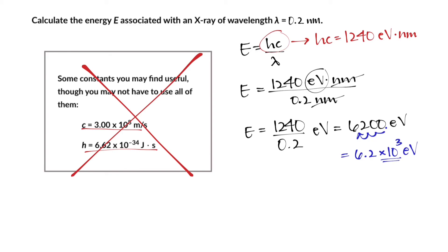This is another way of saying kilo or a thousand, which is one of the common prefixes in the metric system. So this basically says we have an answer of 6.2 keV, which is a very common measurement of energy associated with x-rays.